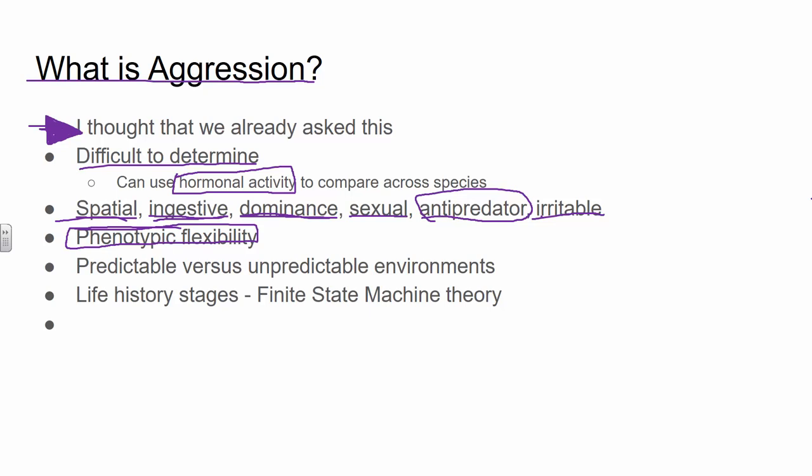We already talked about with invertebrates that context is important in terms of aggression and courtship. If we had a male and a female lobster, the male would not probably display aggressive behavior — but if it was male versus male lobster, then they would. Limited phenotypic flexibility can be problematic, but it's really only problematic in certain situations. What we really want to think about is whether or not your environment is predictable or unpredictable. Every environment has some of both — it's the proportion that matters. Some predictable elements: tomorrow the sun will be up; seasons are roughly predictable.